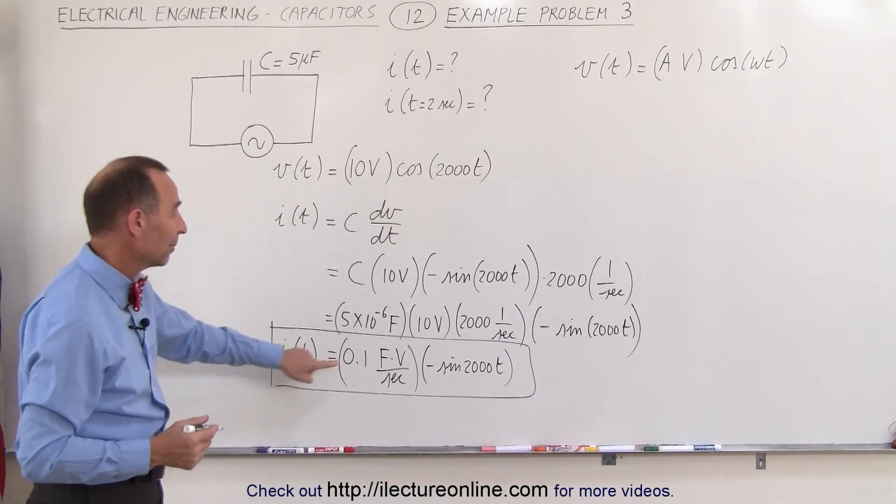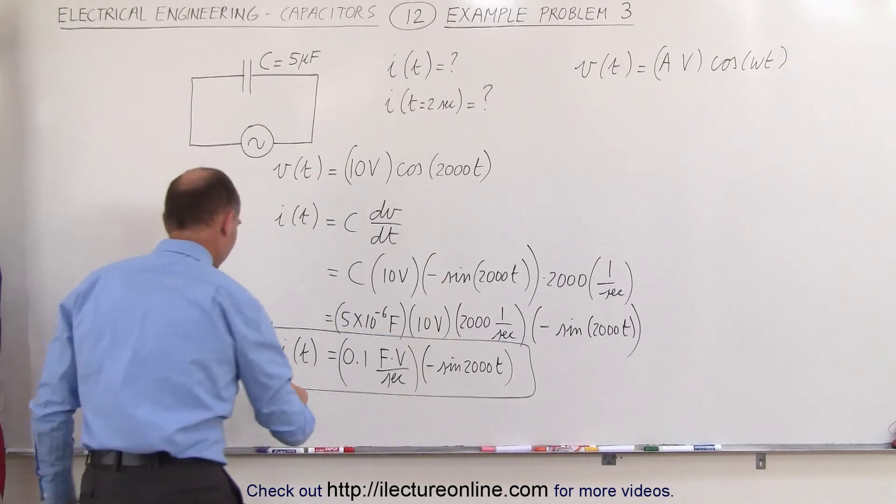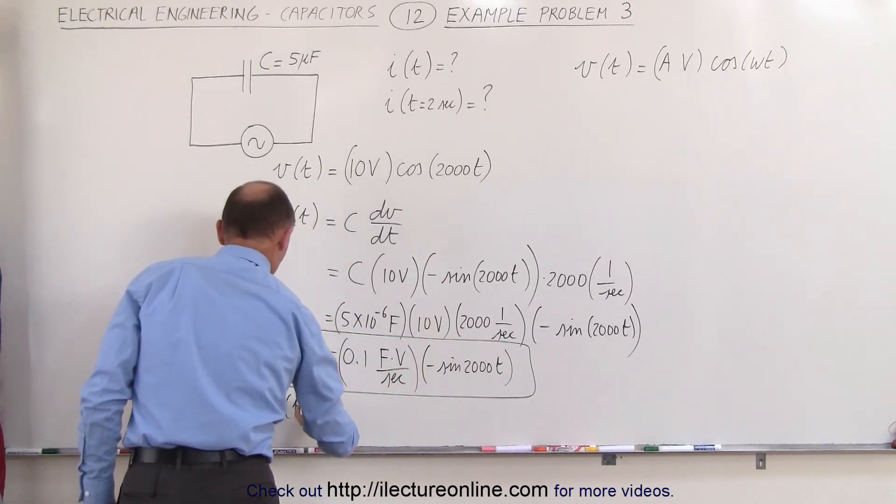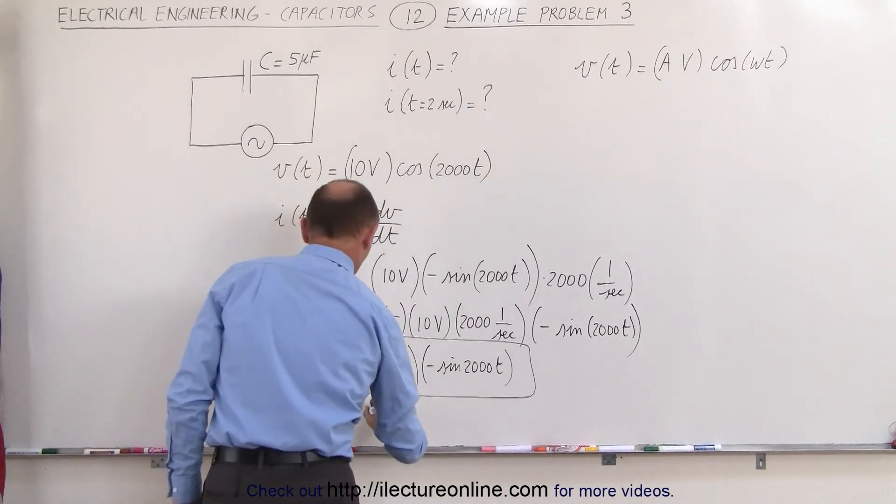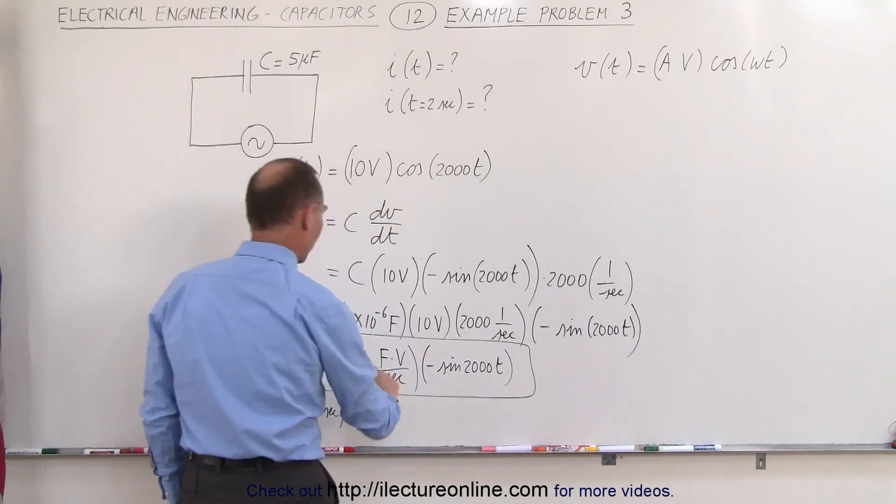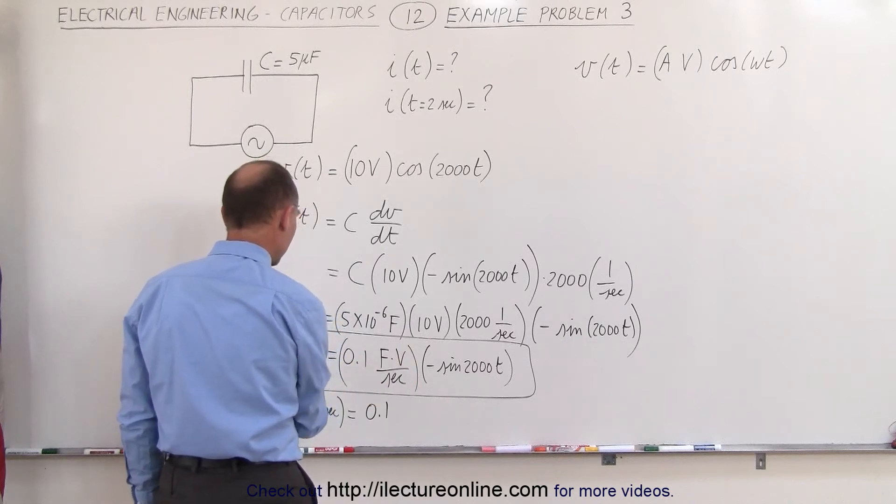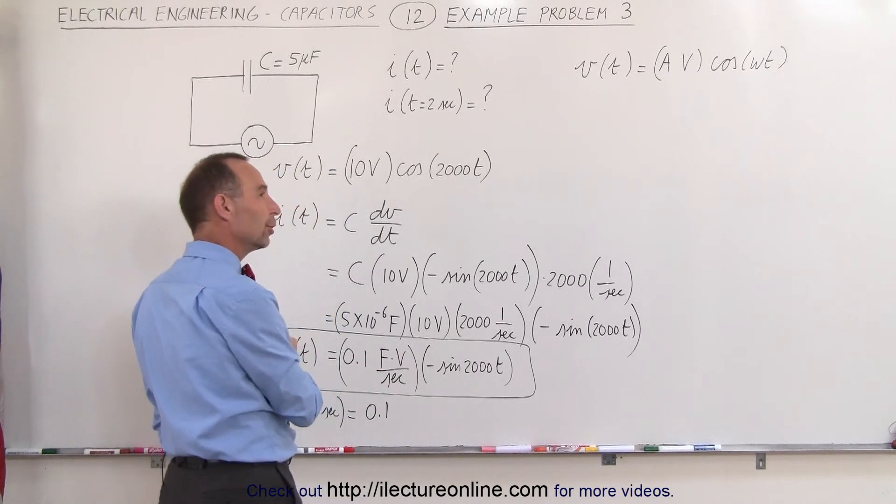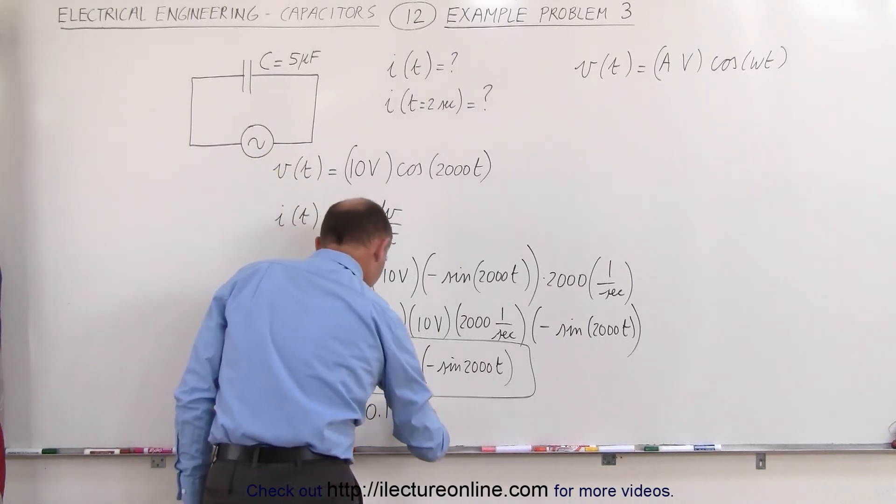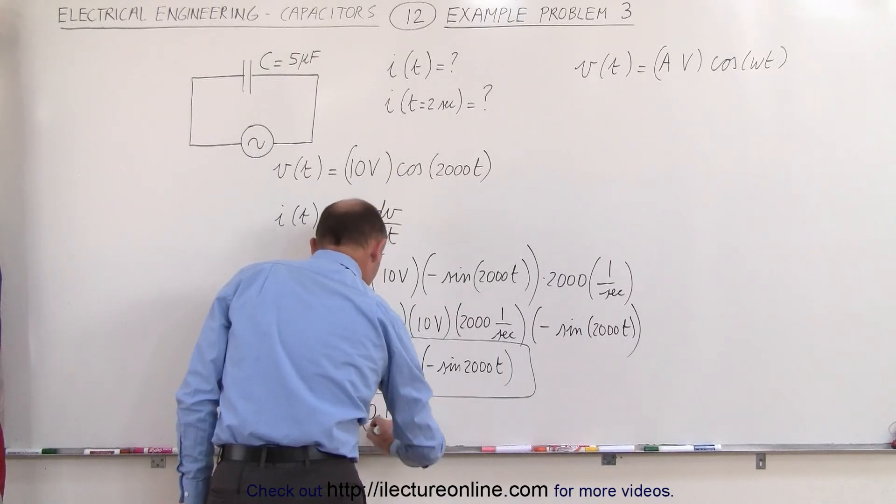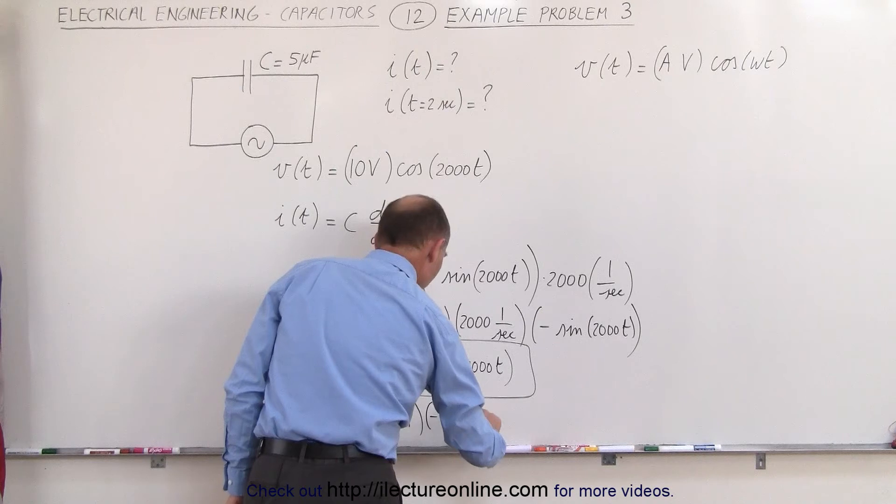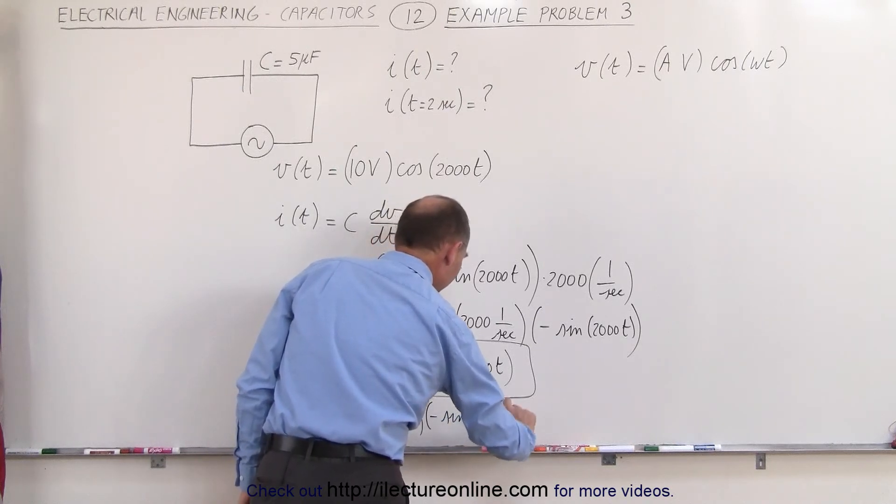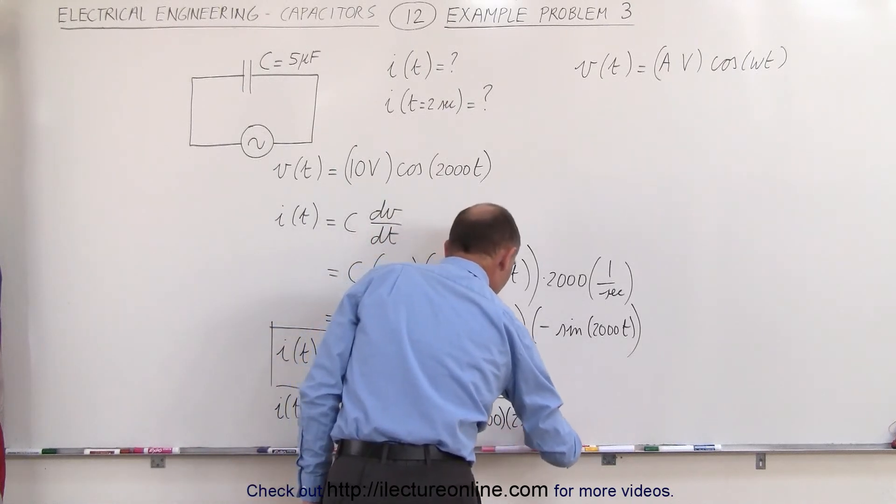And so now we can say that i, when t is equal to 2 seconds, is equal to 0.1—of course the units here are going to be in terms of amps—so 0.1 amp times the negative sine of 2000 multiplied times 2 seconds.